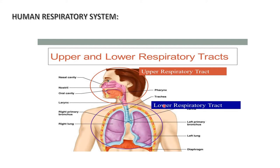The lower respiratory tract is made up of the trachea. The trachea divides and forms bronchus, which then divides and forms bronchioles, which end in alveoli. The lungs and the diaphragm also form part of the lower respiratory tract.